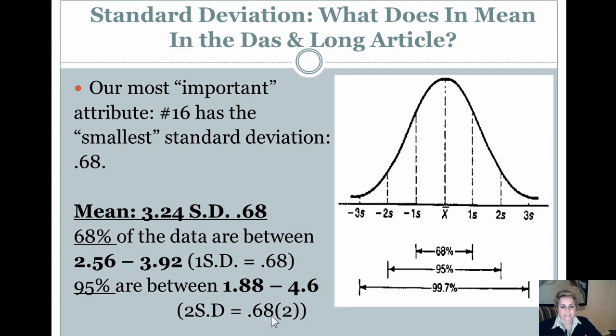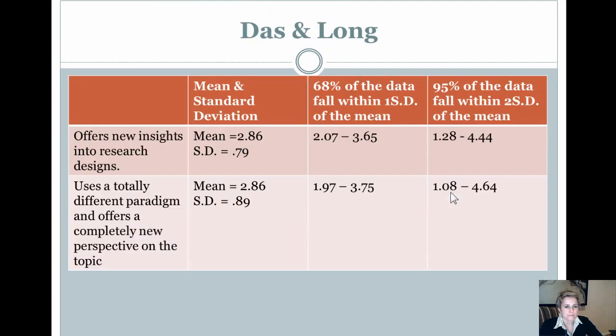And once again, because it had the smallest standard deviation, it meant that most of the data were closer to the mean than the other ones.